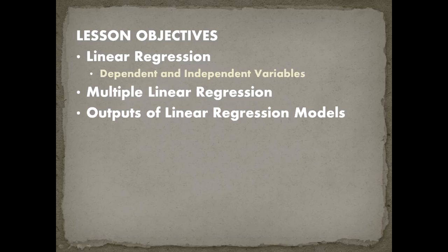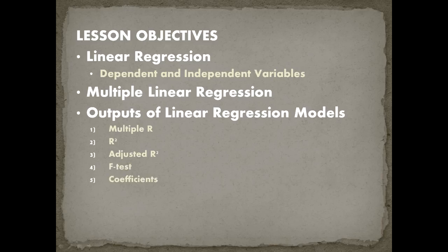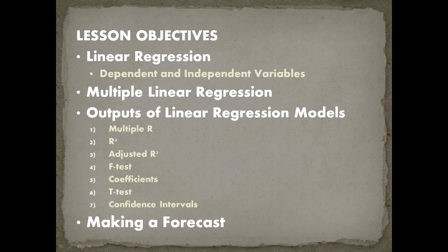After that we're going to cover the outputs of linear regression models. There are a lot of outputs: multiple R, R squared, adjusted R squared, the F test, the model coefficients, the T test, and confidence intervals. Don't be worried by the number of names — we're going to go through each one at a time. The final thing we'll cover today is making a forecast with those linear regression models.